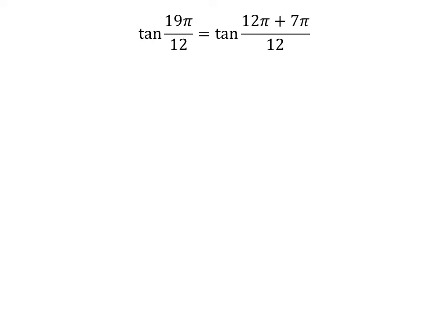19 times pi is equal to 12 times pi plus 7 times pi. So tangent of 19 times pi upon 12 is equal to tangent of 12 times pi plus 7 times pi upon 12.